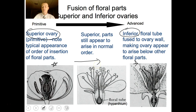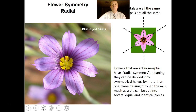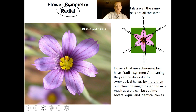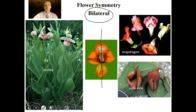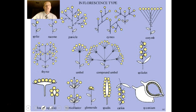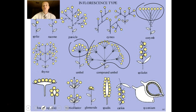Flowers also have symmetry. They have radial symmetry where you can cut them in many different directions like a pizza, as in this blue-eyed grass. Then there are flowers that can be cut only one way to get equal halves — called bilaterally symmetrical flowers — which tend to be the more advanced flower. Examples include orchids, snapdragons, and pipe vines. If you study flowers, there are also many different arrangements about how flowers cluster: umbels, compound umbels, corymbs, catkins, and others.